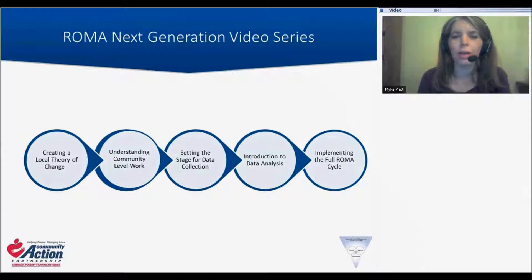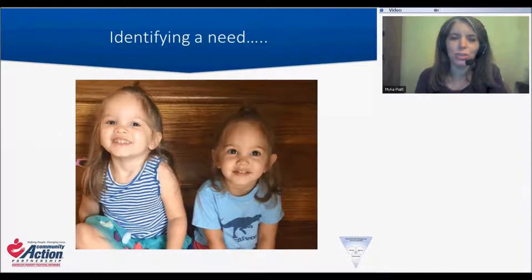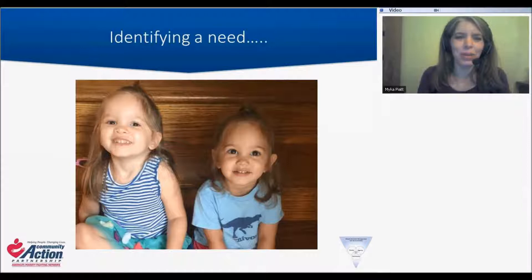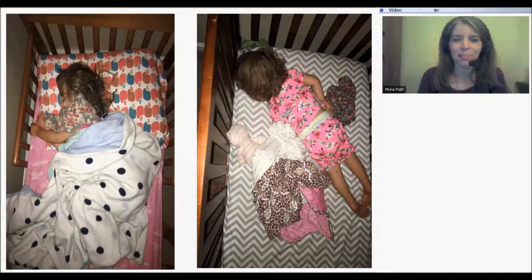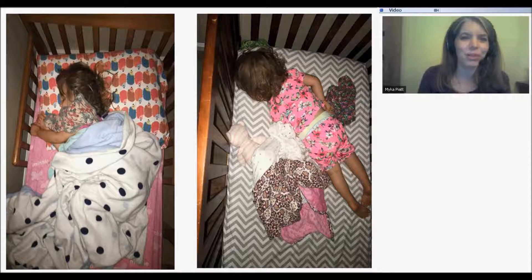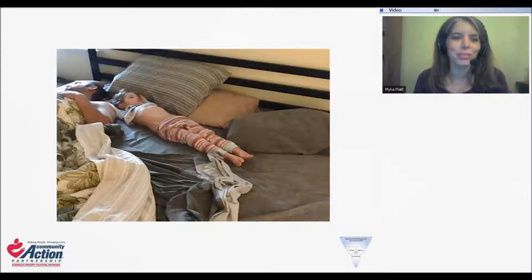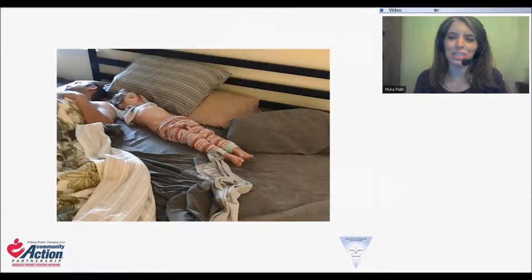These are my daughters, Rosalina and Genevieve. They are two and three. As you can imagine, our household is pretty busy. We have identified an ideal condition in our household — at bedtime, it is best if they are both sleeping in their own beds. However, what was happening more frequently was that Rosalina was finding her way into our bed in the middle of the night, most nights of the week. And so we quickly identified a need, something that was not an ideal condition. And so we started our planning process.